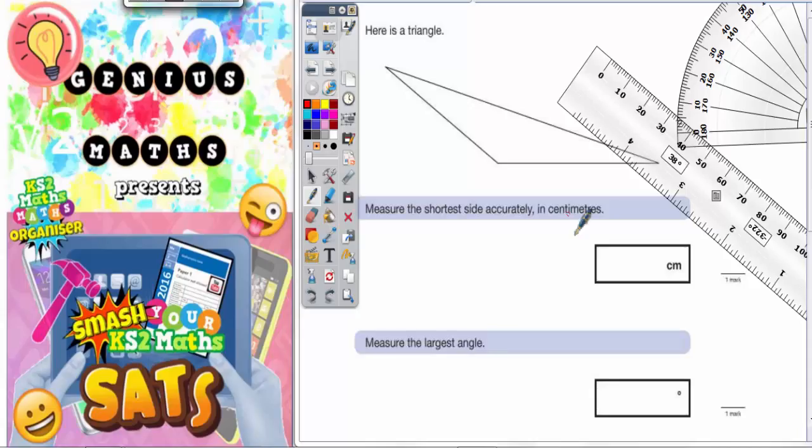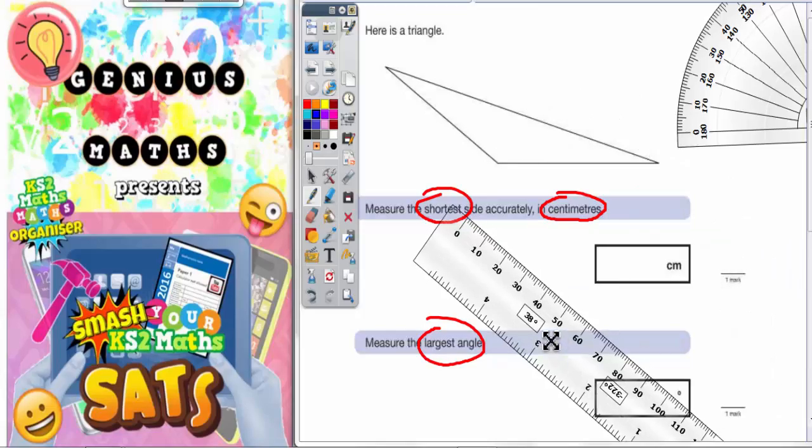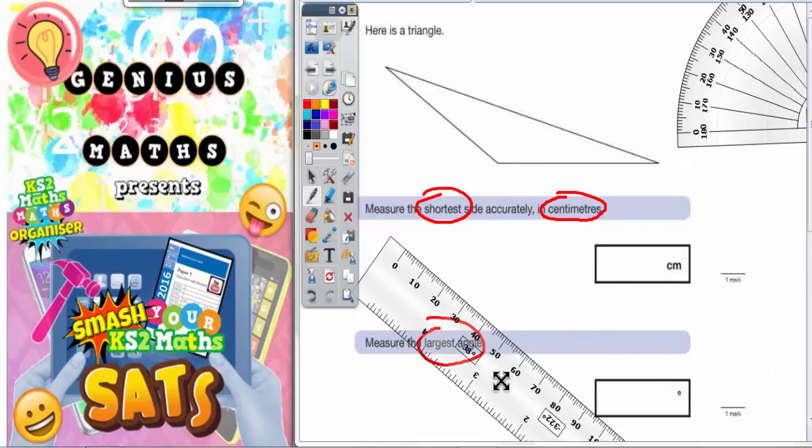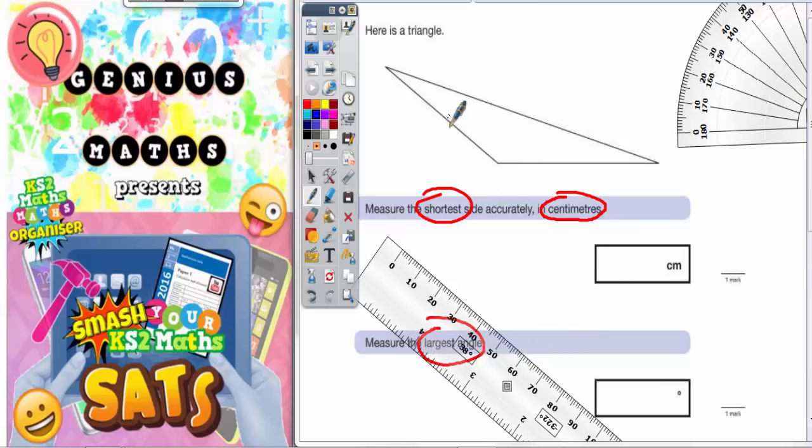Question number nine: here is a triangle. We've got to measure the shortest side accurately in centimeters and we've got to measure the largest angle using a protractor. So obviously to measure the side we need to get ourselves a ruler. Now you can tell just by looking at it that the shortest side is going to be this one.